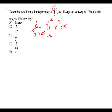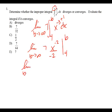To integrate, we add one. So the limit as B approaches infinity of seven times X to the negative two, divided by negative two, from four to B. I'm going to rewrite that — negative seven over two times X squared — from four to B.